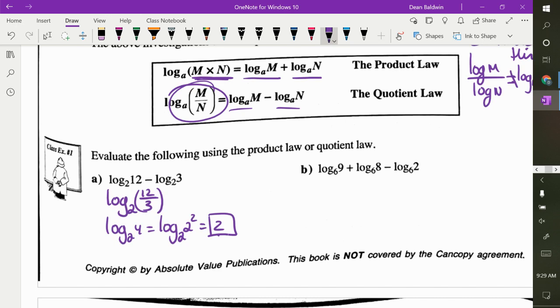So the first one, we're going to simplify these expressions. So we are subtracting, which means what do you do with the arguments? Divide. So that means it is equal to that. And if these bases are different, you can't do it. It's only when the bases are the same. What's 12 divided by 3? 4. Can 4 be written in base 2? Yes. What's my answer? 2.